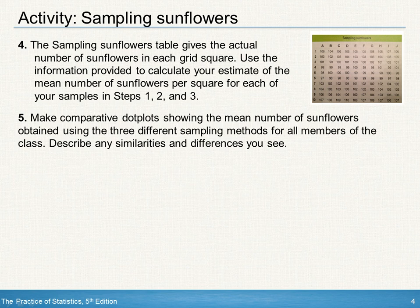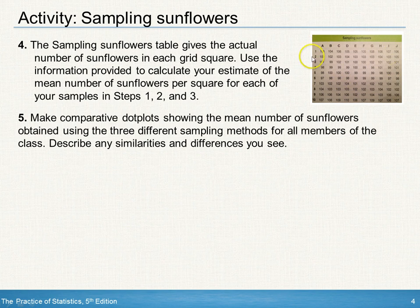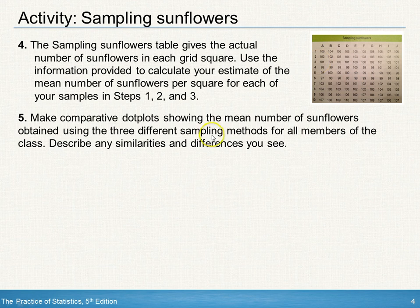In step 4, you will need the sampling sunflower table that gives the actual number of sunflowers in each square grid. Students will now create three comparative dot plots with their mean number of sunflowers from the three different sampling methods. Each student is going to have a sample mean using an SRS method from step 1, a sample mean from using a stratified random sample with rows as strata, and a sample mean using a stratified random sample with columns as strata.